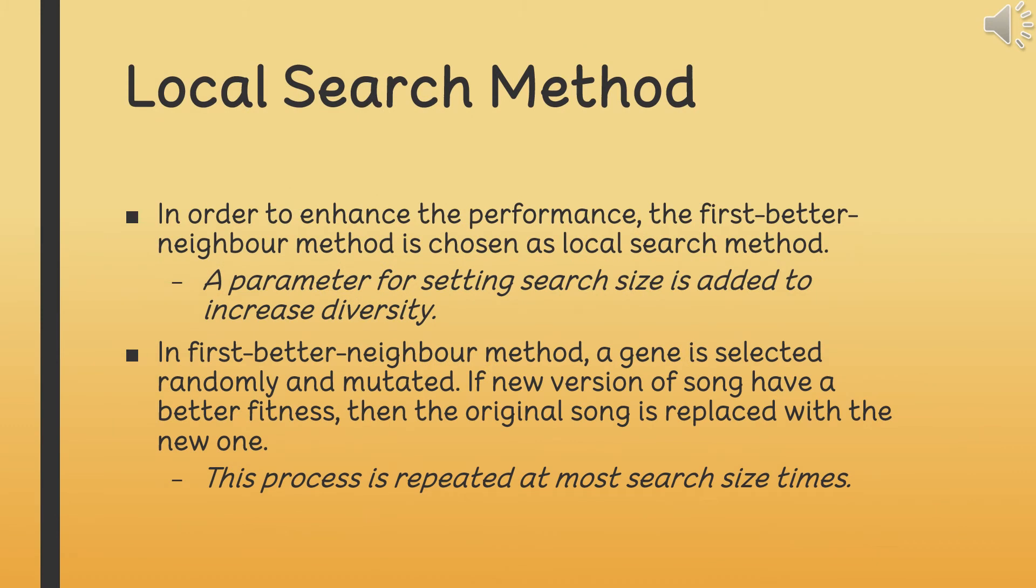In order to enhance the performance, a local search method is implemented, which is called first better neighbor method. In first better neighbor method, a gene is selected randomly and mutated. Original song is replaced with the first song which has a better fitness. This process is repeated at most search size times. Meanwhile, search size is set via a parameter in order to increase diversity.